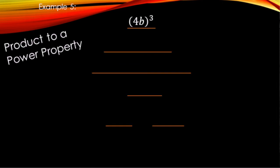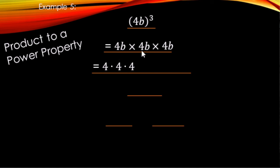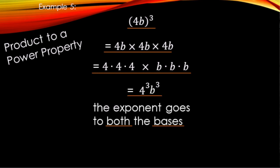The product to a power property: we have (4b) to the third power — three groups of 4b being multiplied. Using the commutative property, we can rearrange to get three 4s and three bs separately, giving 4 cubed times b cubed. The exponent of 3 distributes to both the 4 and the b — similar in feel to the distributive property, but applied to exponents.